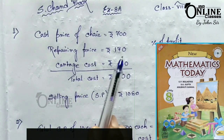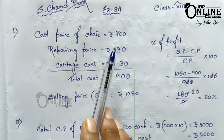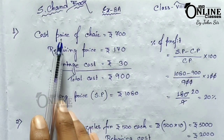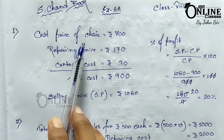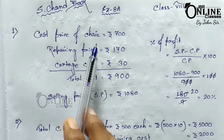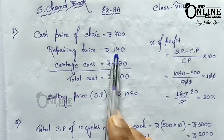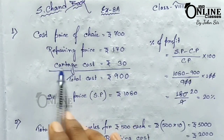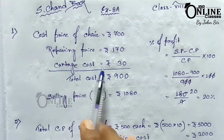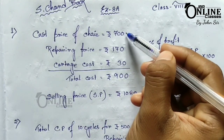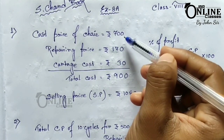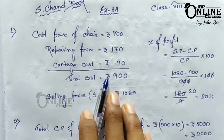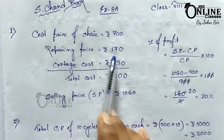This is a chapter from Profit and Loss. In problem number one, a person purchased a chair for rupees 700, with a repairing cost of rupees 170 and a cartage price of rupees 30. You have to add these three amounts to get the total cost of the chair: 700 + 170 + 30.